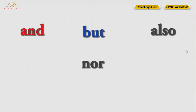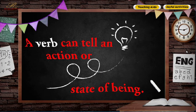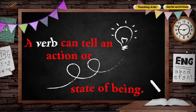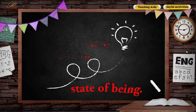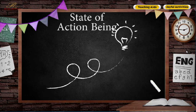Verbs. A verb can tell an action or state of being. For example, action verbs: run, sit, think. State of being verbs: am, is.